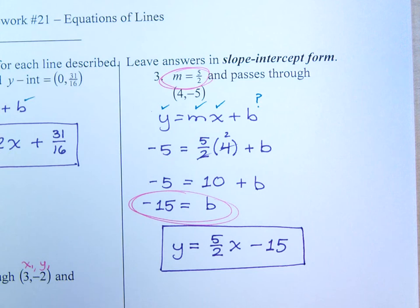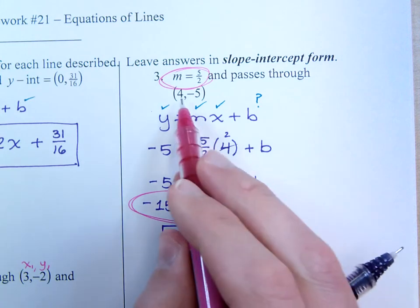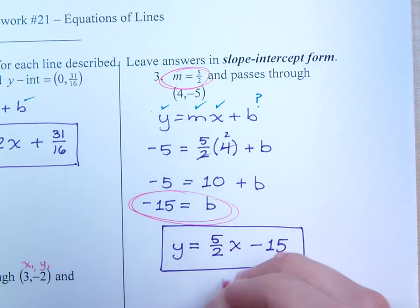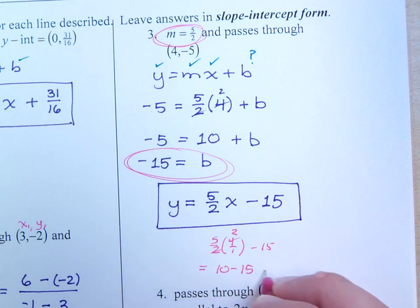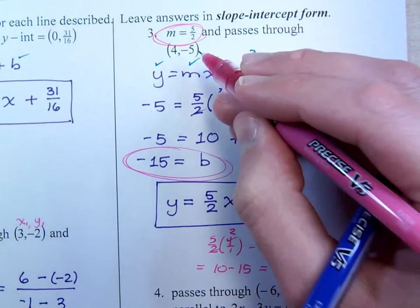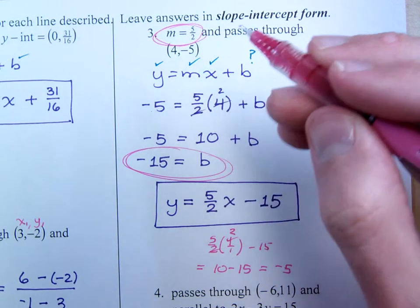You do want to make sure that you can plug in this ordered pair that it does work. If I were to plug in 4 here, 5 halves times 4 over 1, minus 15, that reduces to give me a 2. I get 10 minus 15, which equals negative 5. And that's what I was supposed to end up with, is a negative 5. So, I know the answer is right.